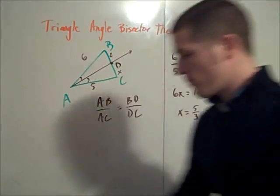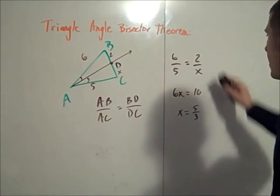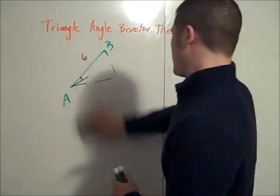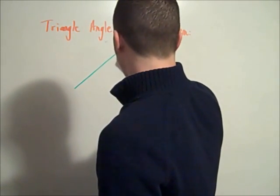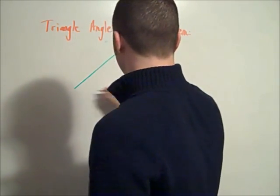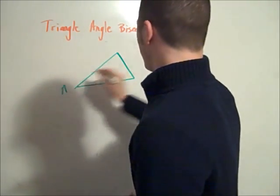This will be a proof for it. The proof is kind of cool. I like it. It's not very intuitive, at least to me it's not. So let's look at our triangle again. This will be my triangle ABC.